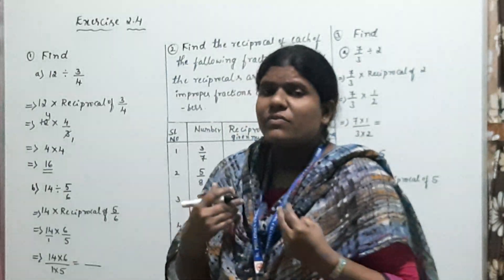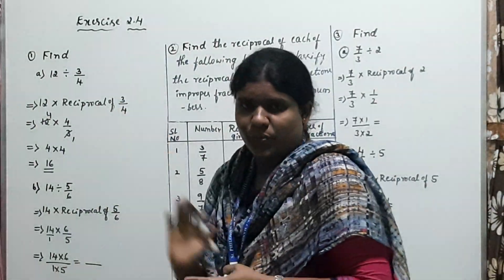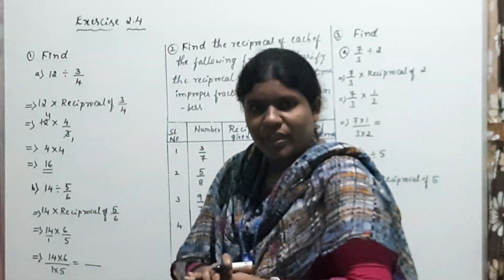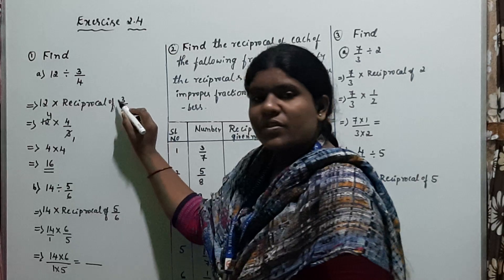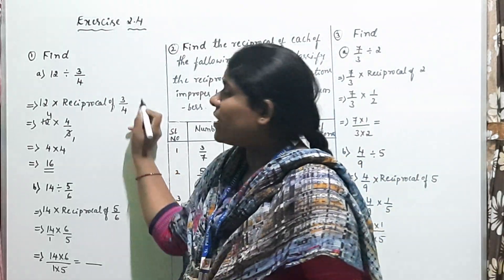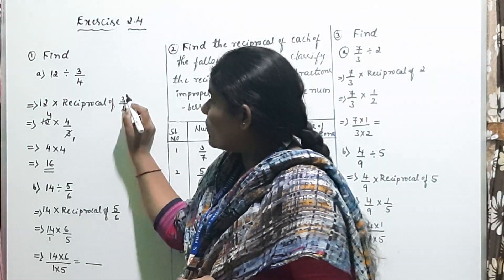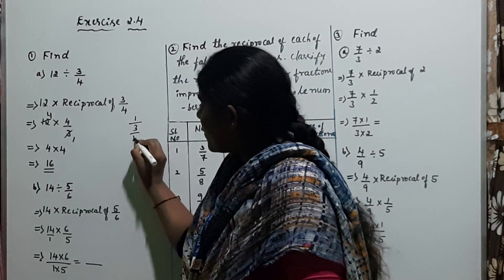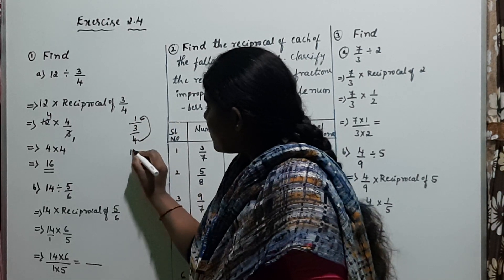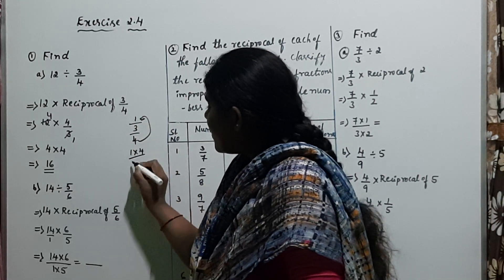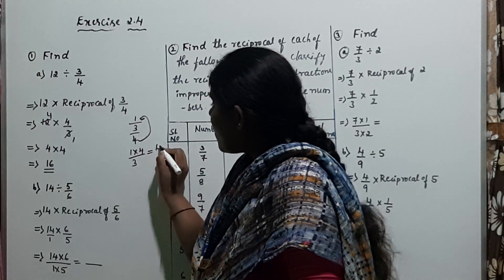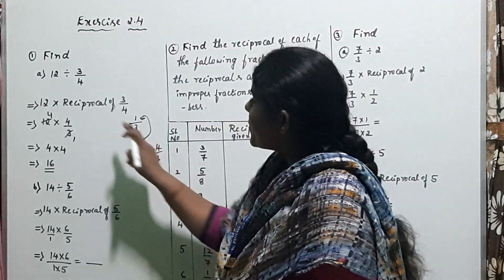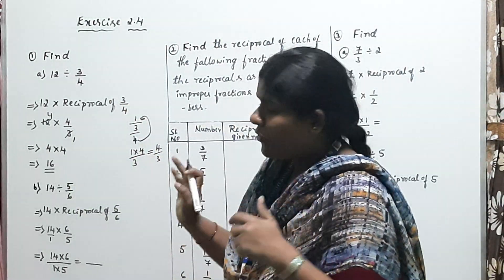What is the reciprocal of 3/4? You interchange the numerator and denominator values: 3 shifts to the denominator and 4 shifts to the numerator. So 1 divided by (3/4) equals 4/3. Therefore, the reciprocal of 3/4 is 4/3.